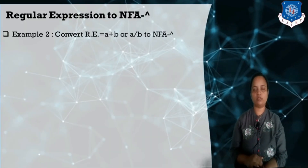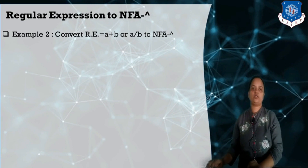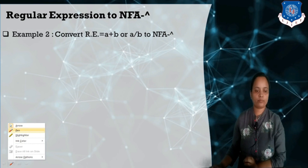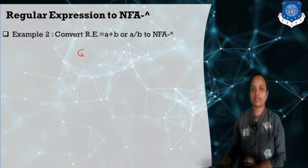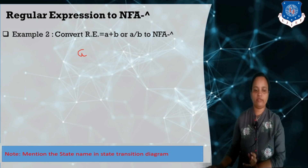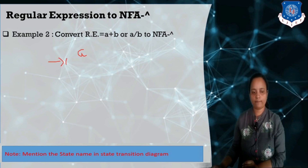Now let's understand how we can perform the union operation. If a union operation expression is given and we need to construct NFA-null — here they say that if I have a string 'a', I need to accept it, and if I have a string 'b', I need to accept it. For the single symbol, we can construct: this is for 'a' and this is for 'b'.